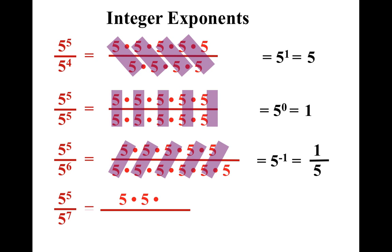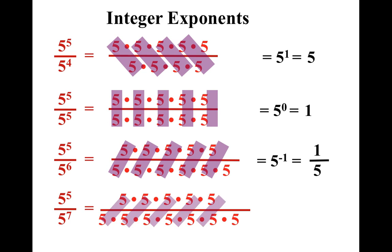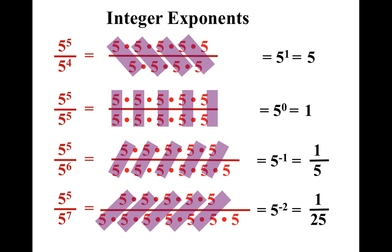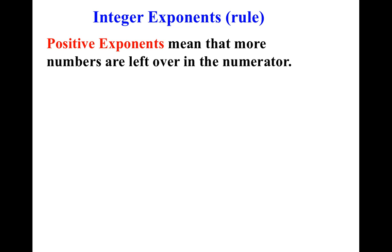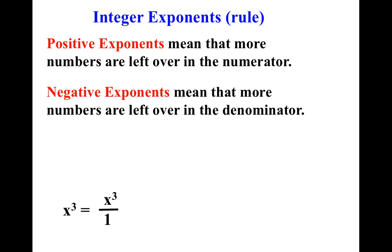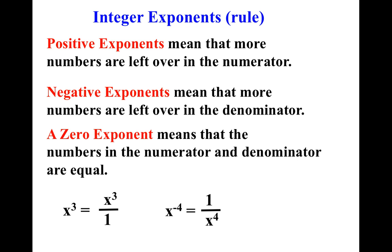That's all it's doing. 5 to the first power means the 5 was left over in the numerator. 5 to the negative first power means the 5 was left over in the denominator. Let's see it one more time — add another set of 5s, and once again when we simplify, we end up getting two 5s left over in the denominator. So this is 5 to the negative second power, because 5 plus negative 7, or 5 minus 7 is negative 2. Positive exponents mean more numbers were left over in the numerator. Negative exponents mean more base numbers were left over in the denominator. And a zero exponent means the numerator and denominator were equal; therefore the answer is always 1.